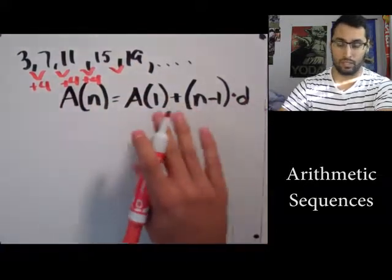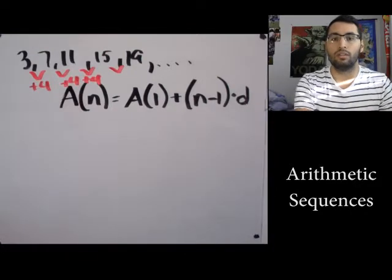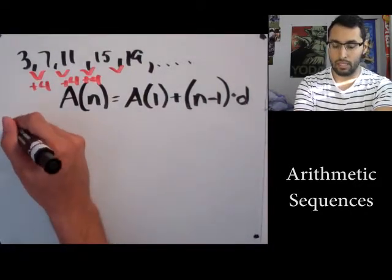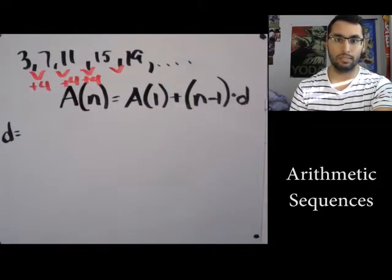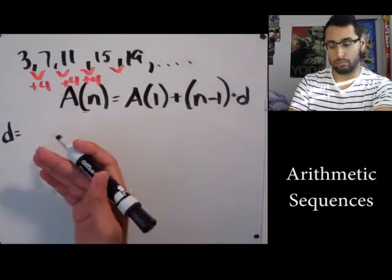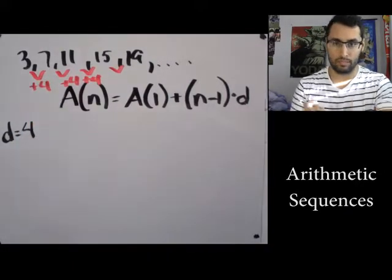With this, that pattern we just call d. Now d stands for common difference - it's just a fancy way of saying what is the pattern. So we can say that d is 4.